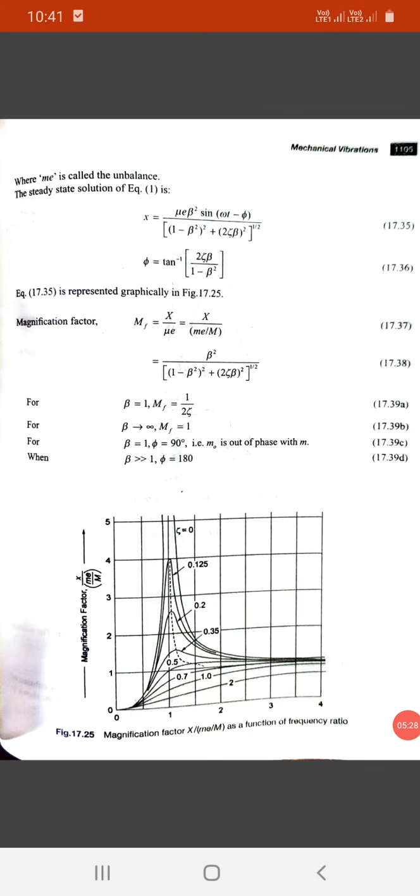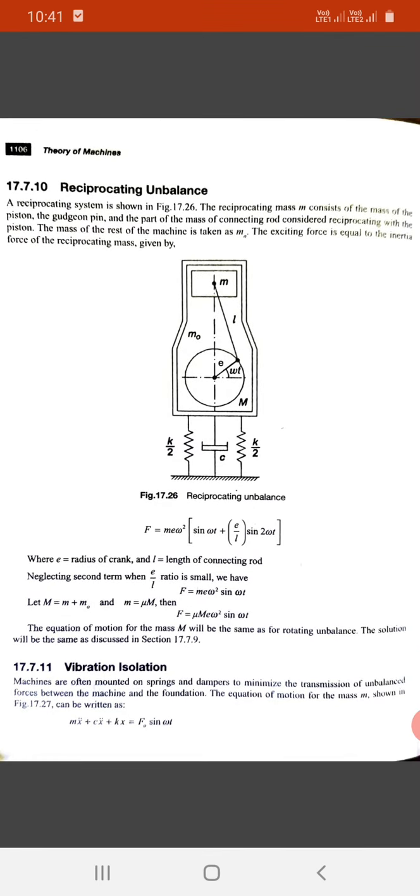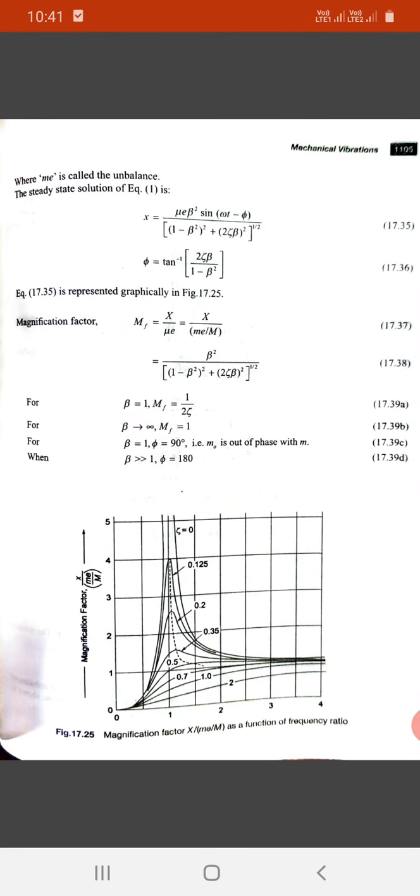Now, the magnification factor MF equals X upon mu e, that is equals to beta squared upon square root of bracket one minus beta squared whole squared plus two zeta beta whole squared. Equation 17.38: for beta equals to one, MF equals to one upon two zeta.